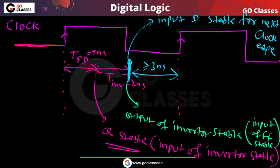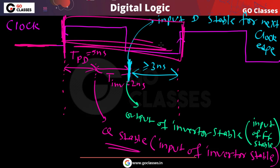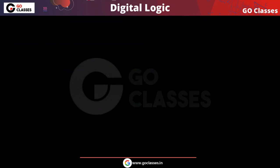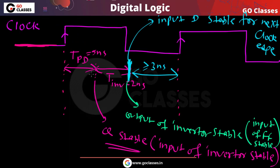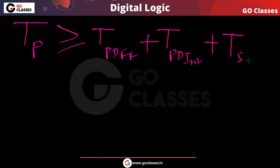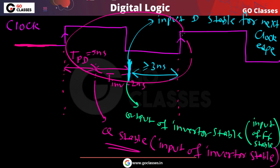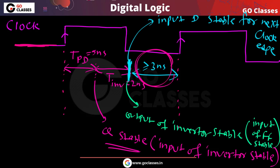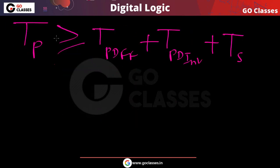So looking at the full clock period — from one rising edge to the next — the clock period T must be greater than or equal to: propagation delay of the flip-flop plus propagation delay of the inverter plus setup time of the flip-flop. This is our derived equation.